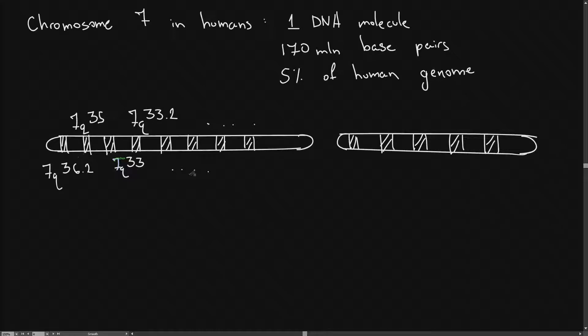And so this is one DNA molecule. Across this DNA molecule we have 170 million base pairs. And these 170 million base pairs make up 5% of the human genome.